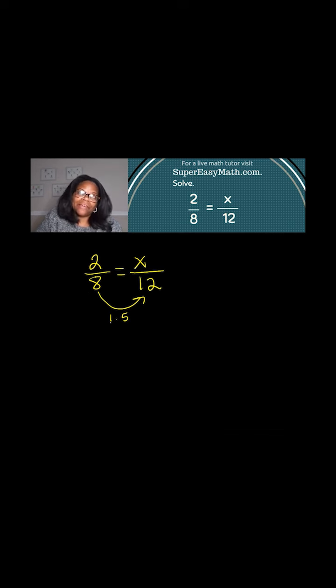If I multiply the bottom like that, then I also have to do the top like that. And so that would be 1.5 up here being multiplied by the 2, which would give me 3. So the second fraction ends up being 3 over 12, so that means x equals 3.